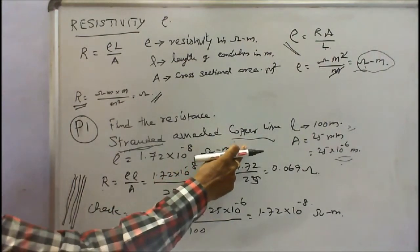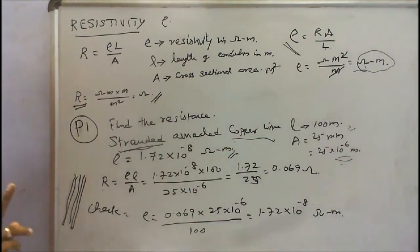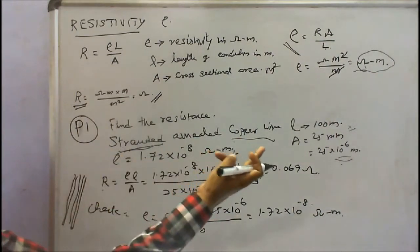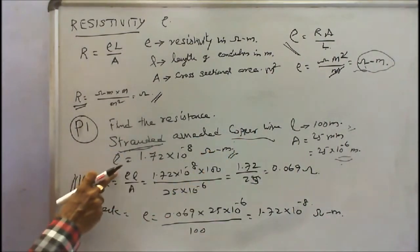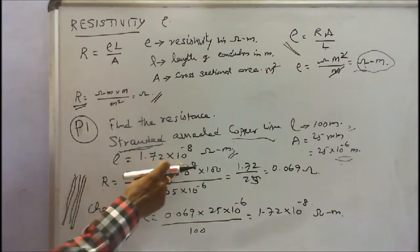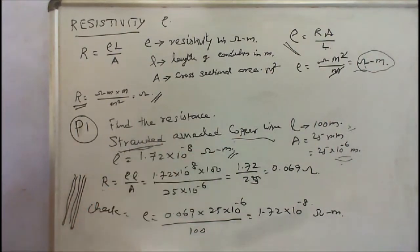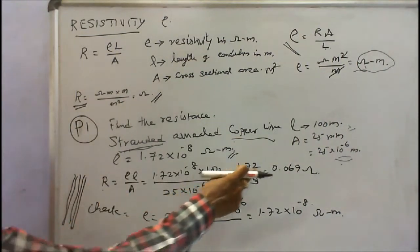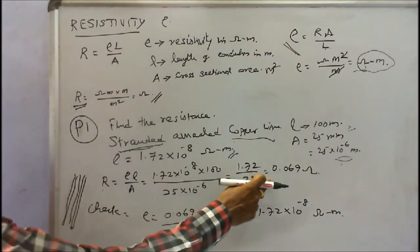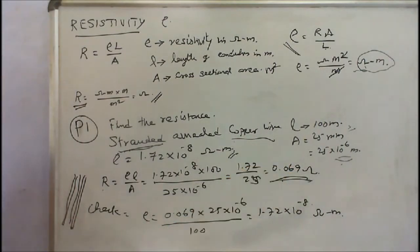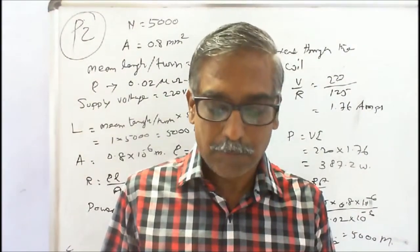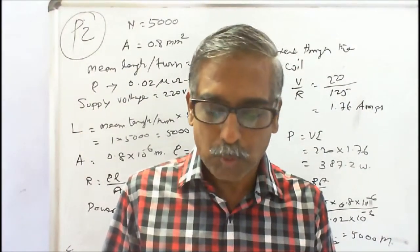Hard drawn copper wire is generally used in transmission lines. Here the length is 100 meters, cross-sectional area is 25 mm², and resistivity is 1.72 × 10⁻⁸ ohm-meter. Simply substitute in the formula R = rho × L / A. The result is 0.069 ohms.